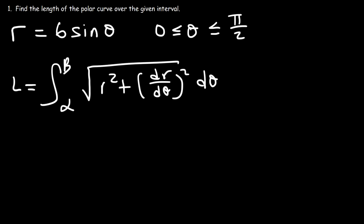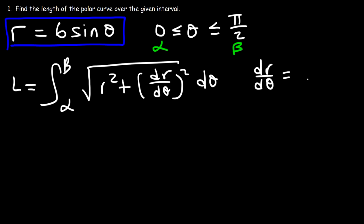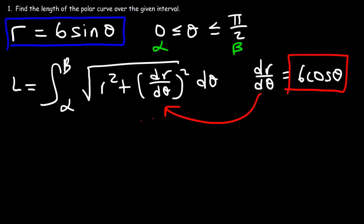Alpha is 0, beta is pi over 2, and we already have r. The only thing we're missing is dr/dθ. We need to differentiate this expression. The derivative of 6 sine theta is 6 cosine theta. Now that we have dr/dθ, we can plug everything into the expression.